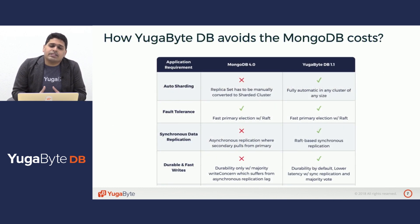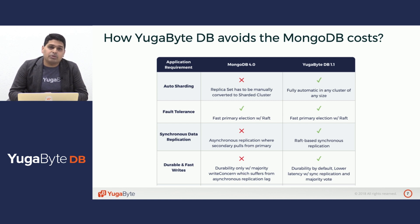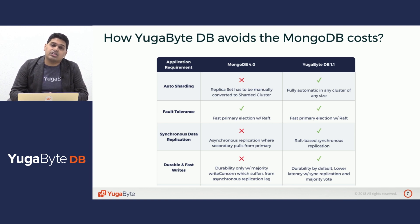I think it's worth taking a moment to see how we at Yugabyte have designed a new transactional scale-out database from the ground up that avoids some of these inherent costs of the MongoDB architecture. First is around sharding. Sharding is not an afterthought in YugabyteDB — it's fully automatic and happens in any cluster that you create. You can add nodes to the cluster, and the new nodes will start getting some of the existing shards, contributing to the write resources necessary to serve incoming write requests.